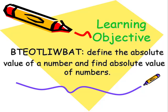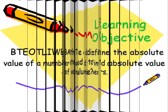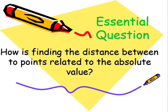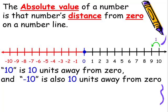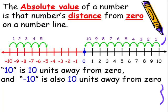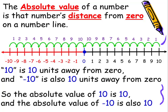By the end of this lesson, I'll be able to define the absolute value of a number and find the absolute value of numbers. How is finding the distance between two points related to the absolute value? The absolute value of a number is the number's distance from 0 on a number line. For example, 10 is 10 units away from 0, and negative 10 is also 10 units away from 0. So the absolute value of 10 is 10, and the absolute value of negative 10 is also 10.